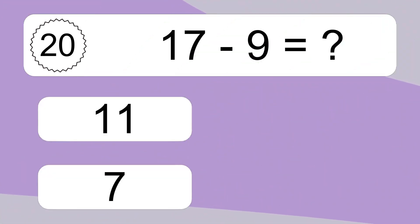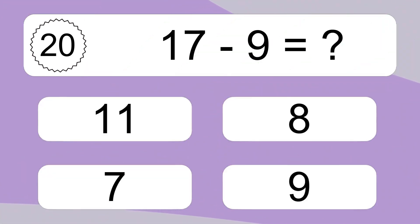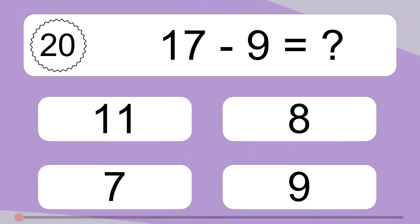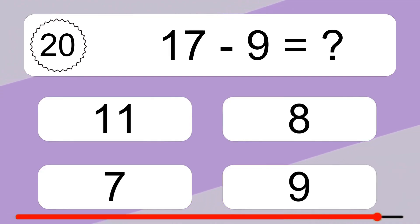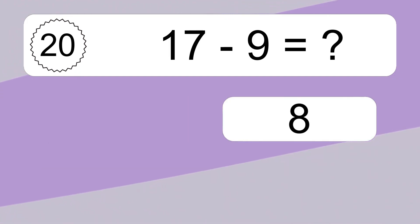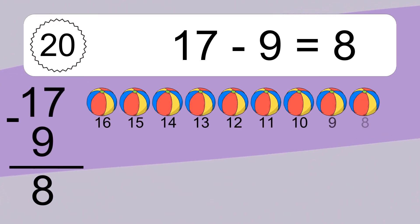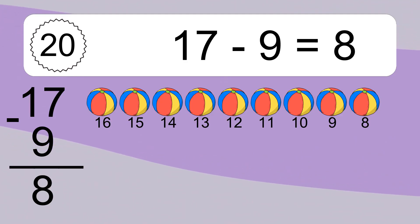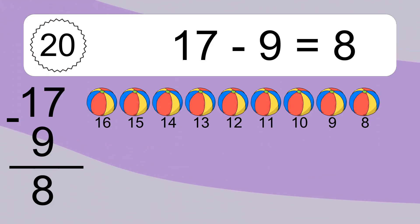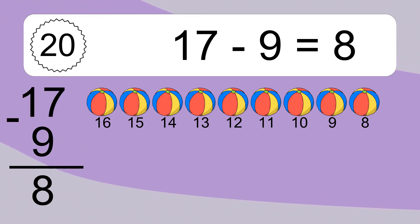17 minus 9 equals what? 17 minus 9 equals 8. Let's count it. 16, 15, 14, 13, 12, 11, 10, 9, 8.